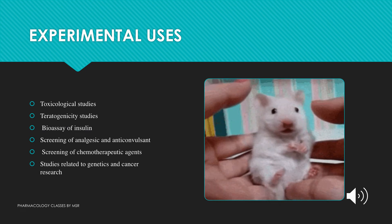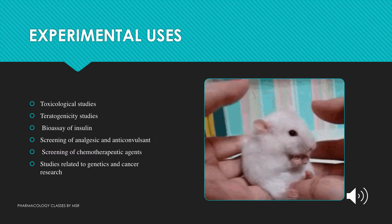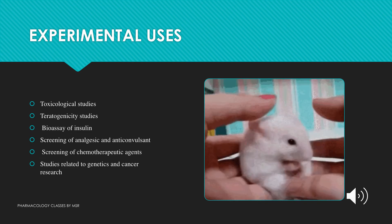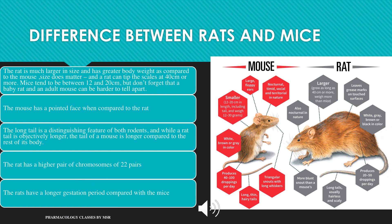Mice are used for toxicological studies, teratogenicity, biological analysis of insulin, screening of analgesic and anticonvulsant activity, therapeutic agent screening, and genetics and cancer research. To differentiate rats from mice: rats are larger, mice have a more pointed face, and the mouse tail is longer relative to its body. Rats have more chromosome pairs and a longer gestational period than mice.